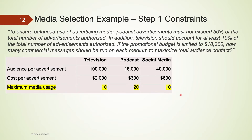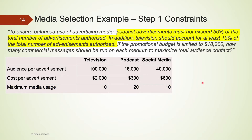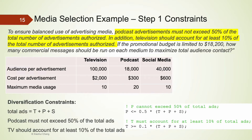There are also constraints on maximum media usage: TV commercials and social media ads should not exceed 10 each, and podcasts should not exceed 20. Additionally, the company wants a balanced use of advertising media — podcast ads must not exceed 50% of the total number of ads authorized, and television should account for at least 10% of the total ads. So P ≤ 0.5×(T+P+S) and T ≥ 0.1×(T+P+S).